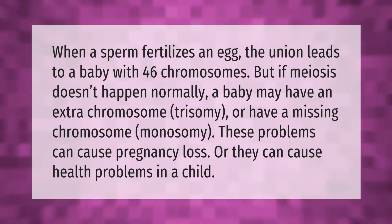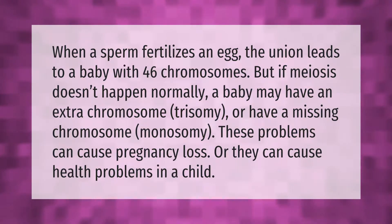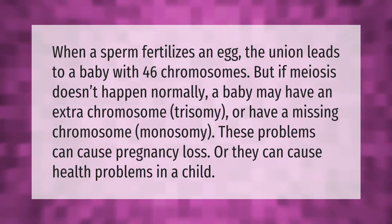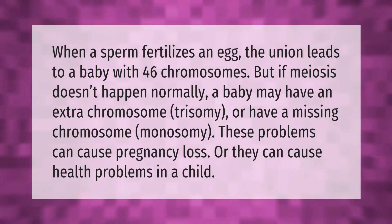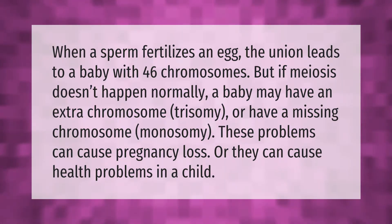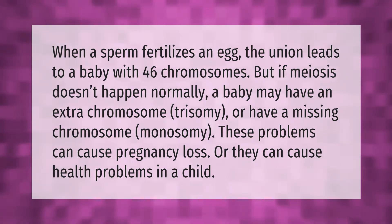But if meiosis doesn't happen normally, a baby may have an extra chromosome — trisomy — or have a missing chromosome — monosomy. These problems can cause pregnancy loss or they can cause health problems in a child.